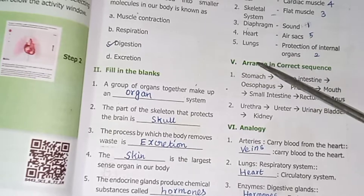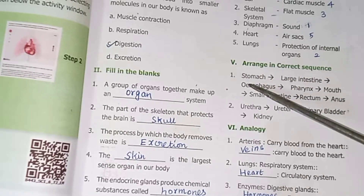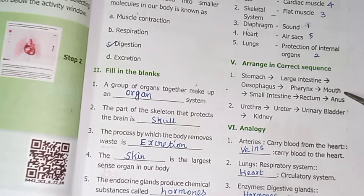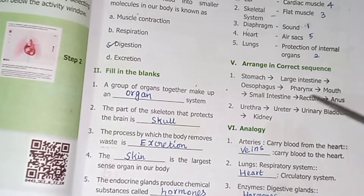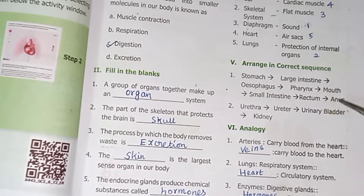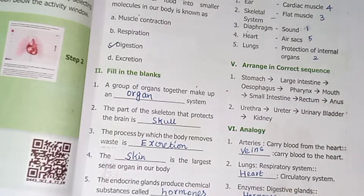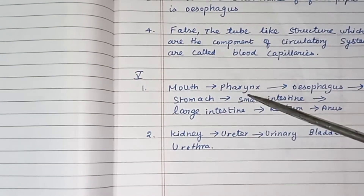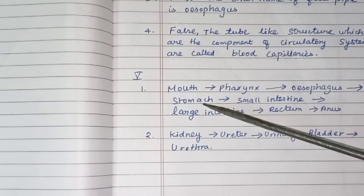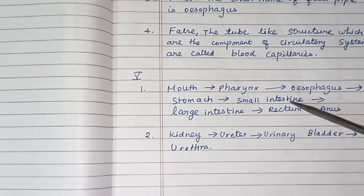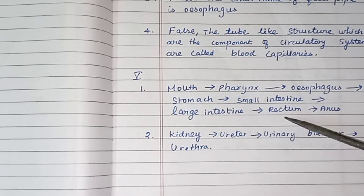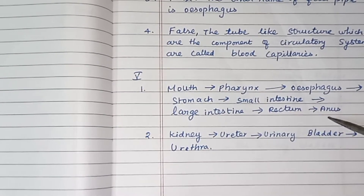Promoter 5: Arrange in correct sequence. The digestive system sequence is: Mouth, throat, esophagus, stomach, small intestine, large intestine, rectum, anus. The urinary system sequence to arrange: urethra, ureter, urinary bladder, kidney — correct sequence is: kidney, ureter, urinary bladder, urethra.